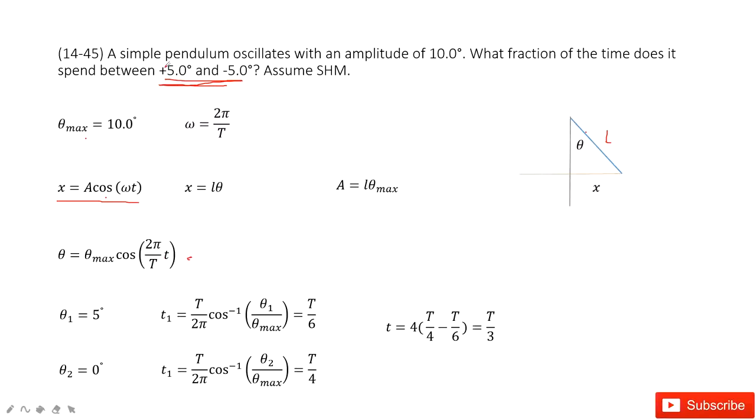Now first, when theta one is 5 degrees, it's there. This is the maximum moving to 5 degrees.